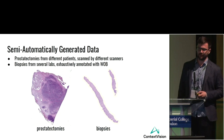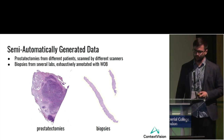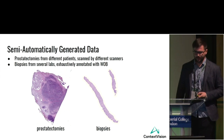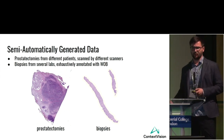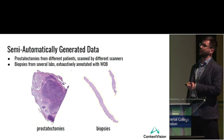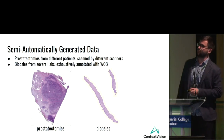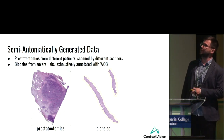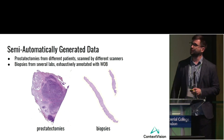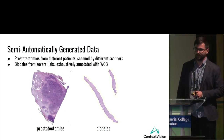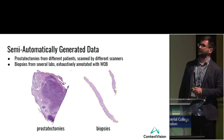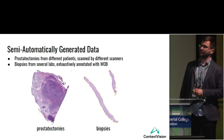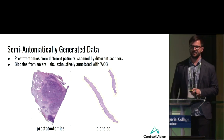Dealing with this variation is very important. We collect data from different scanners and labs, and use automatic data augmentation. Using this master annotation method, we generated data for different patients scanned by different scanners, including prostatectomies — large whole prostate slices after resection — and biopsies. One prostatectomy provides up to 40 times more tissue than biopsies, giving us a lot of data.